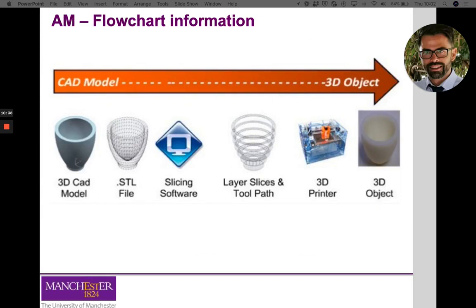In terms of the flowchart to create three-dimensional physical objects using additive manufacturing, this information is common across the whole range of processes — whether using an extrusion-based system, stereolithography, or laser sintering, the steps from modeling to physical printing are all the same. Normally we start with a three-dimensional CAD model, which can be directly designed using SolidWorks, or obtained via reverse engineering if we don't have the digital model.